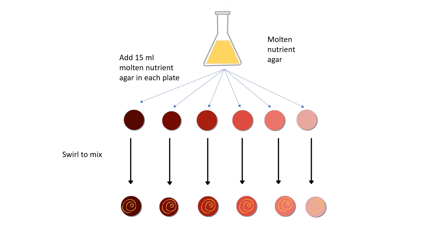In the next step, take molten agar and transfer 15 ml into each petri dish containing the inoculum. In each petri dish, pour 15 ml of molten agar and swirl it to mix.